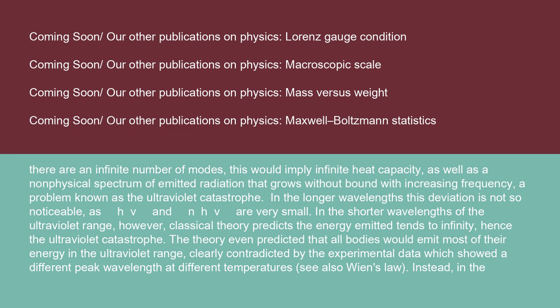In the longer wavelengths, this deviation is not so noticeable, as h·nu and n·h·nu are very small. In the shorter wavelengths of the ultraviolet range, however, classical theory predicts the energy emitted tends to infinity — hence the ultraviolet catastrophe. The theory even predicted that all bodies would emit most of their energy in the ultraviolet range, clearly contradicted by the experimental data, which showed a different peak wavelength at different temperatures.